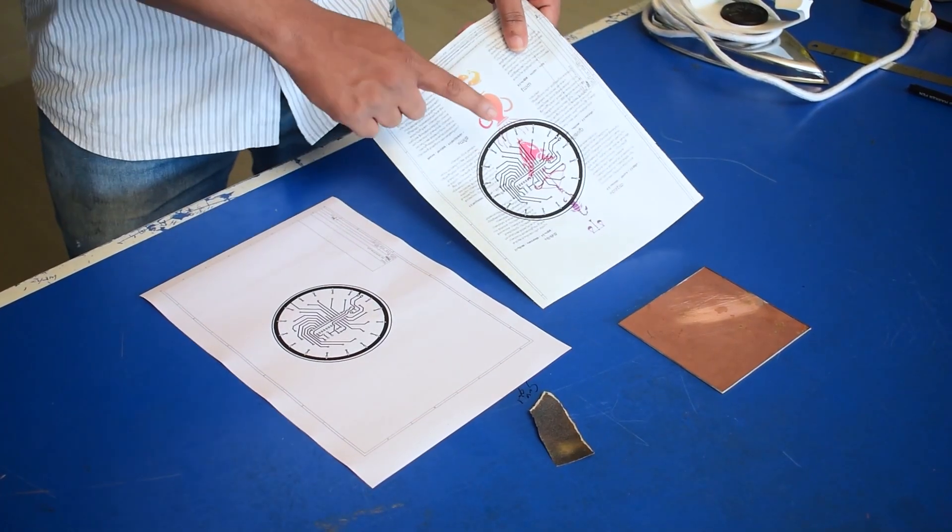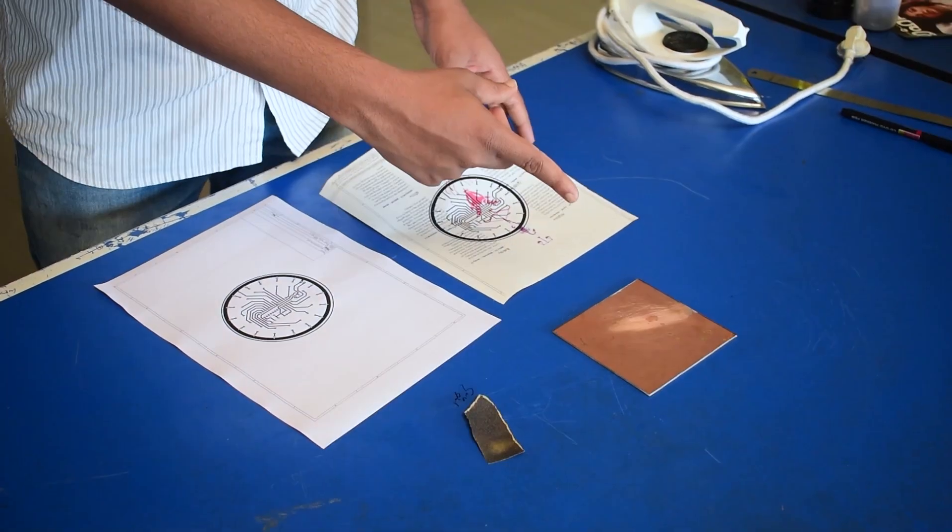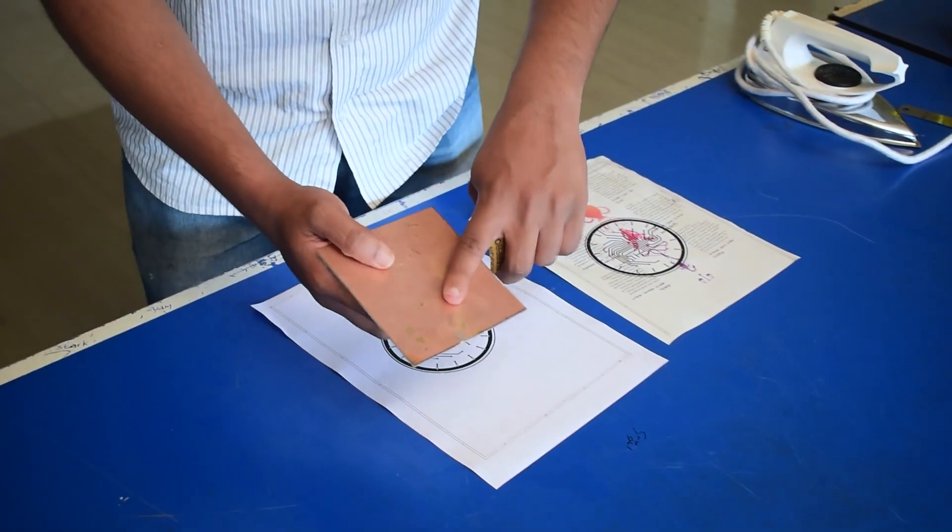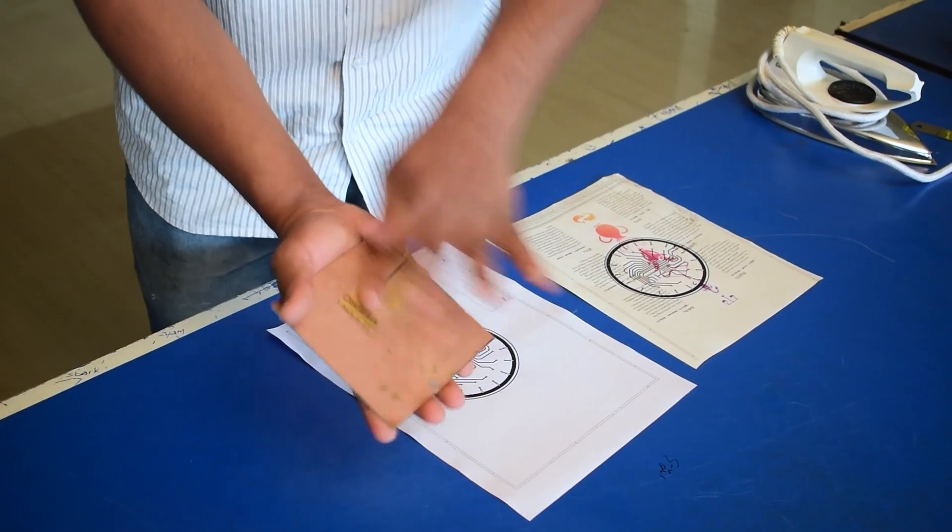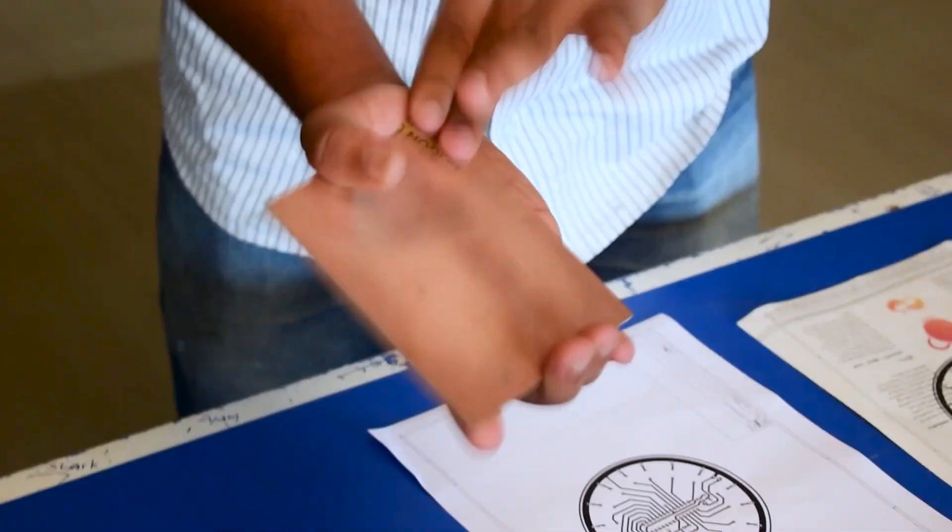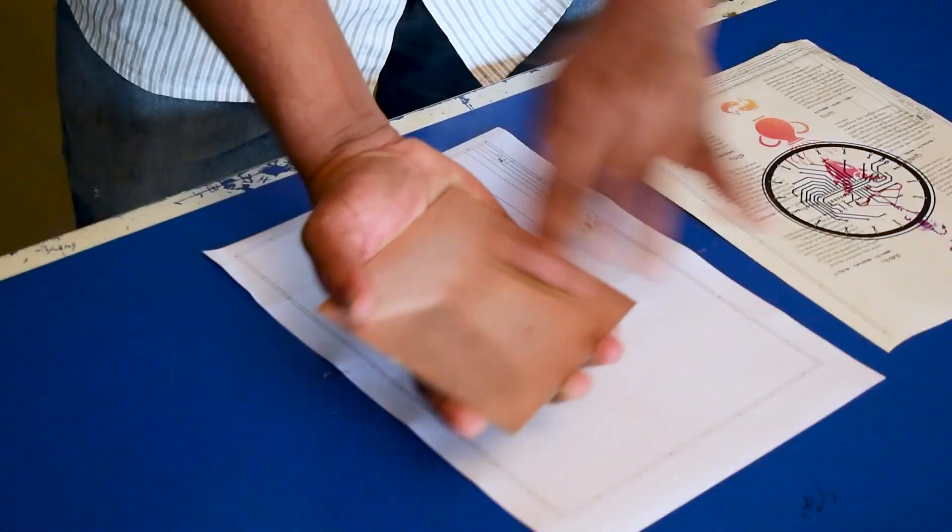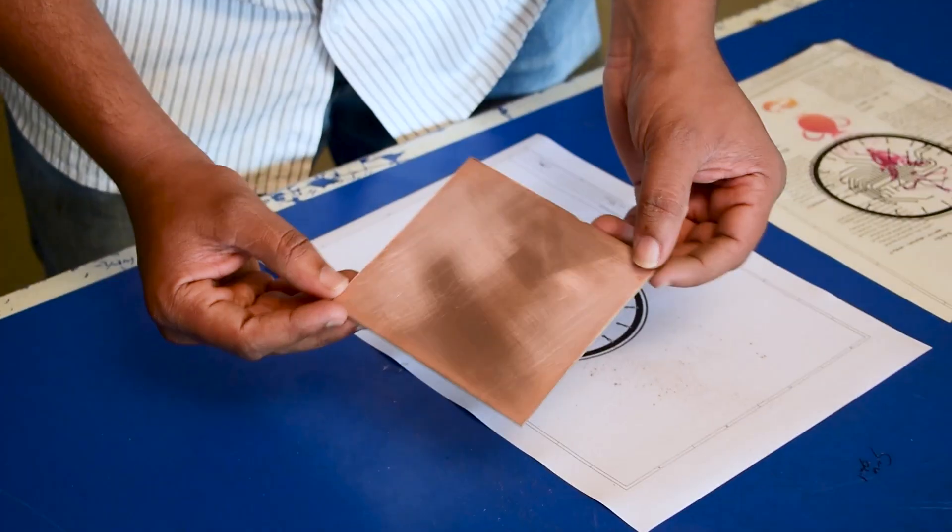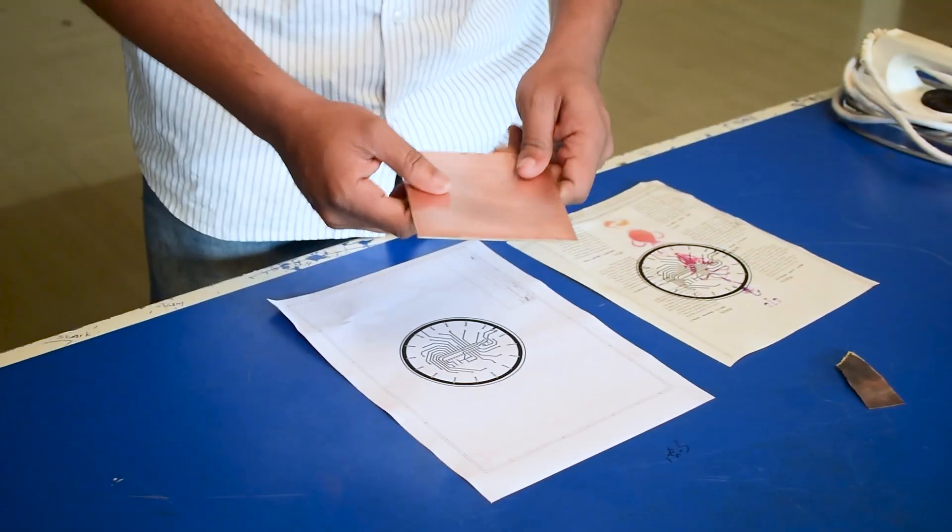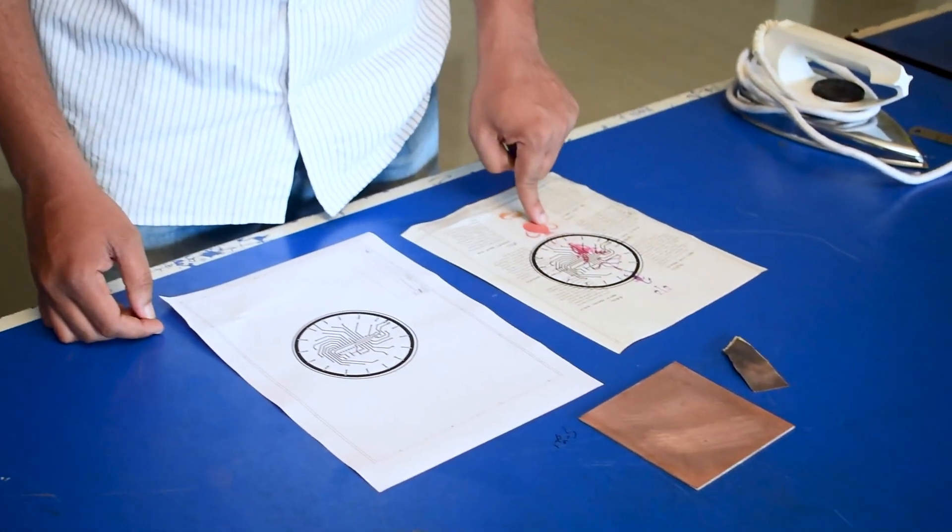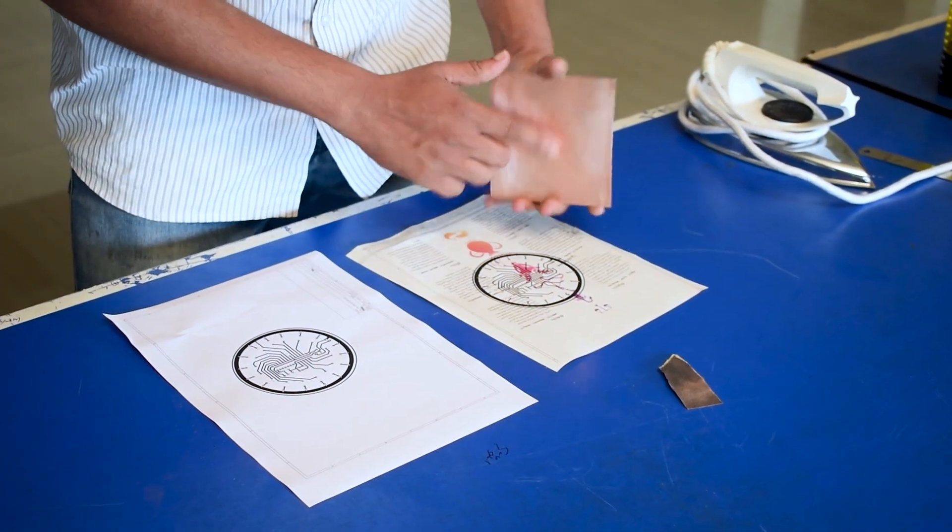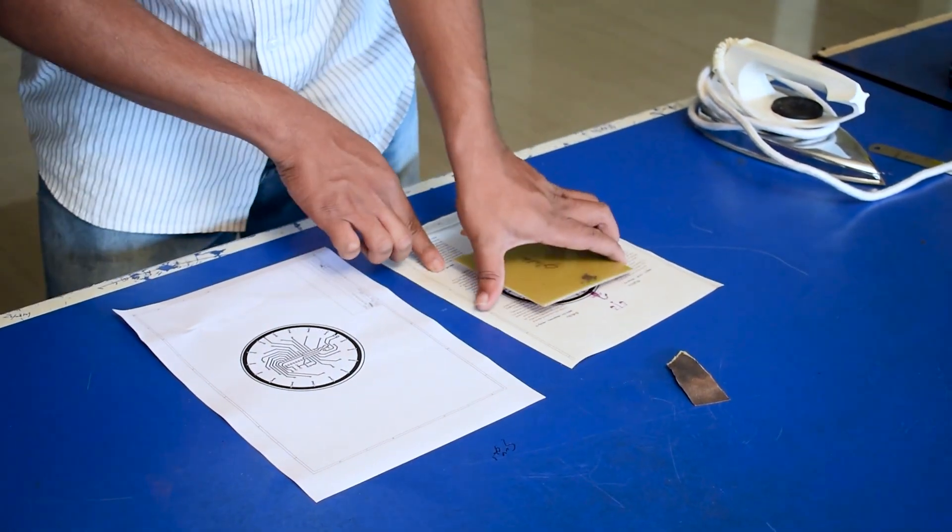We have to transfer the design to copper cladboard. There may have irregularity in the cladboard, so we have to clean the surface of cladboard using sandpaper. Yes, we got smooth and finished surface. Let's place them over the printed design. While placing the cladboard, ensure it covers the design completely.